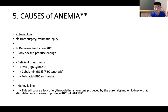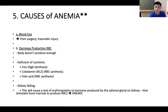Anemia can also be caused by kidney failure. The kidneys produce erythropoietin — a hormone that stimulates the bone marrow to produce red blood cells. If the kidney is failing, it doesn't release erythropoietin, nothing stimulates the bone marrow to produce red blood cells, and the patient becomes anemic.